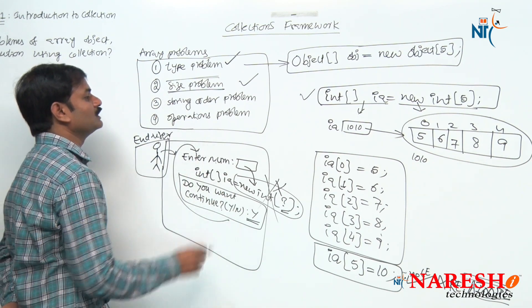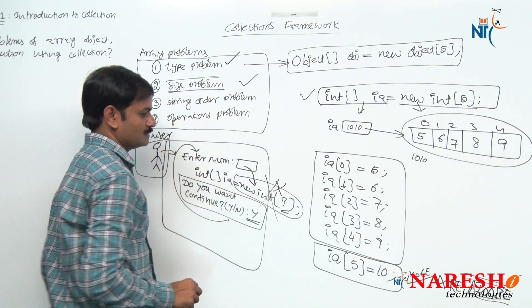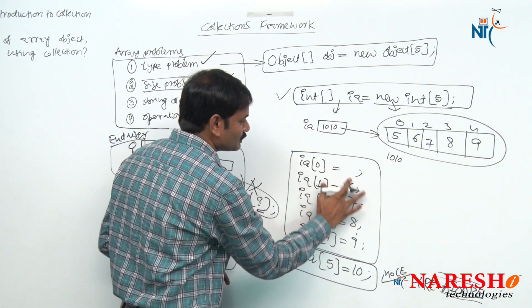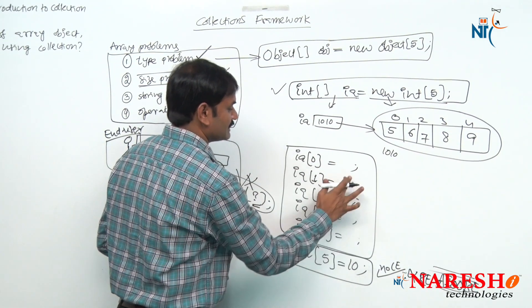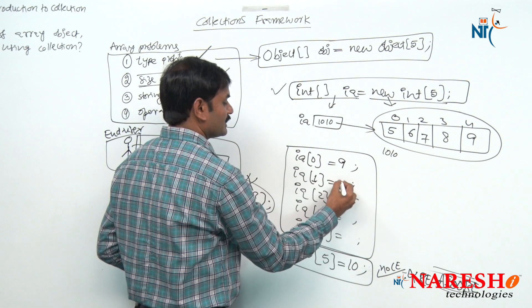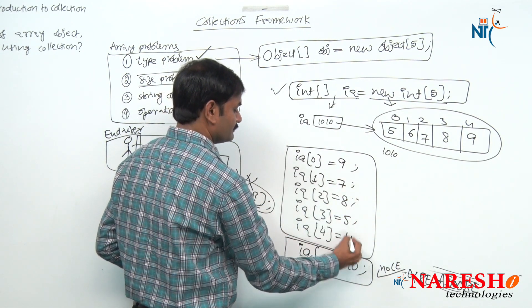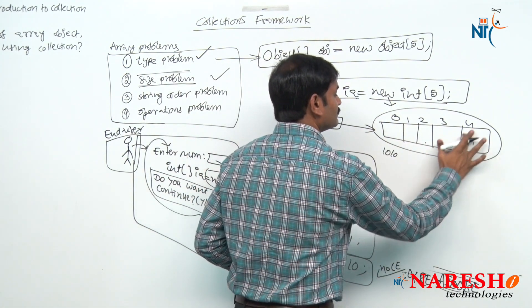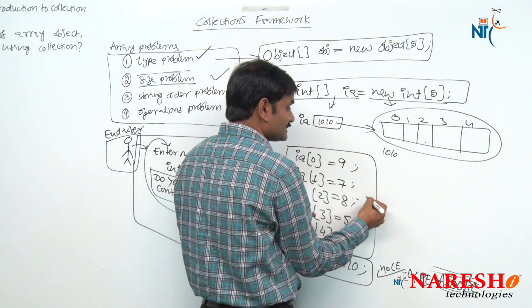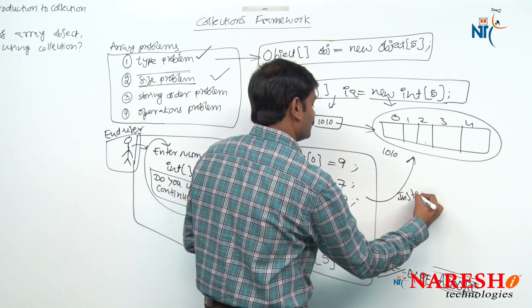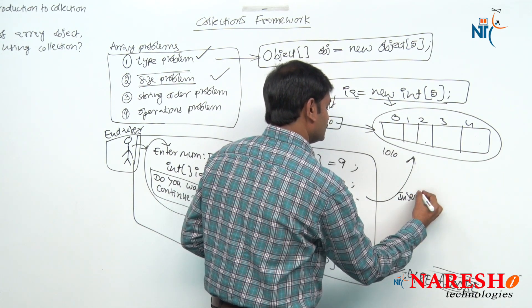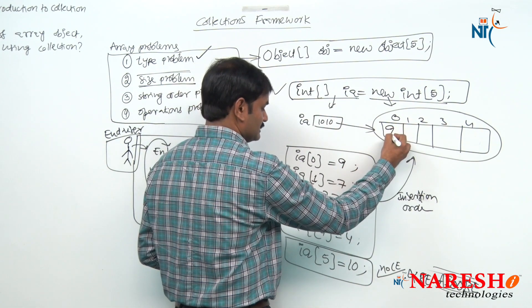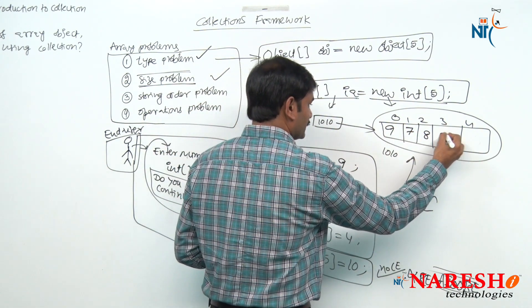Next, let us move to the storing order problem. I created an array object and stored values like 9, 7, 8, 5, 4. Array stores elements only in insertion order — whatever order you insert, 9, 7, 8, 5, 4, that is the order stored. Array will always store objects in insertion order and the retrieving order is random.